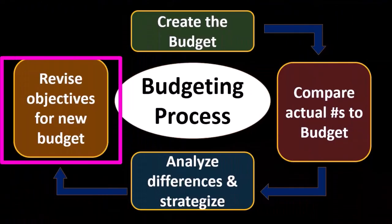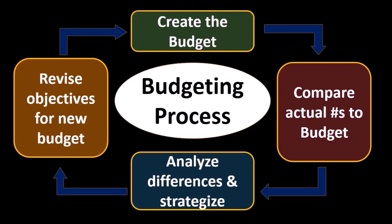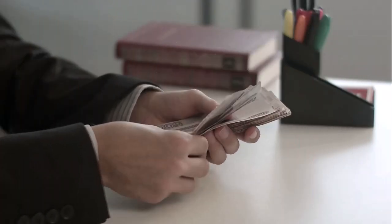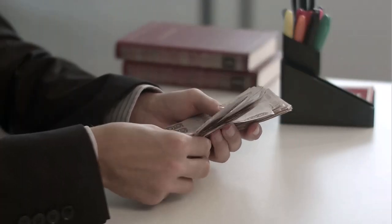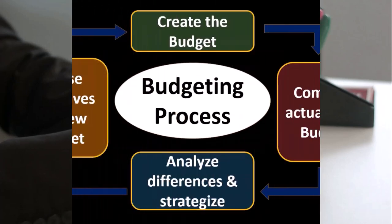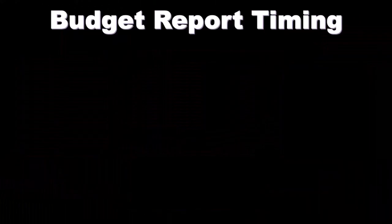We're going to revise the objectives for the new budget and then create the new budget. This is the standard cycle we will go through within the budgeting process. We plan, we budget, we project out with that budget, then the time period passes. We compare what happened to what our projection was, we look at the differences, and then we make changes based on those differences.